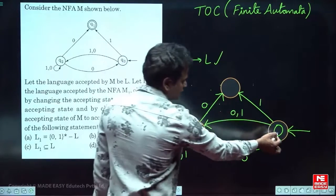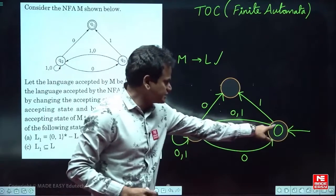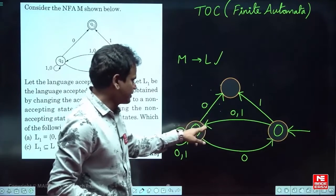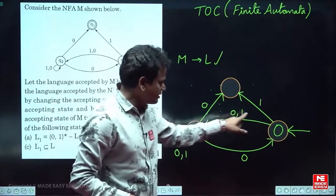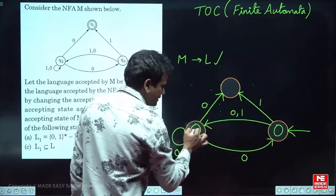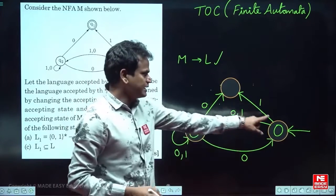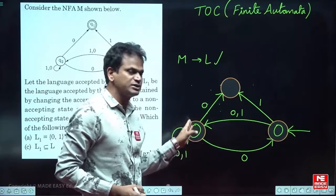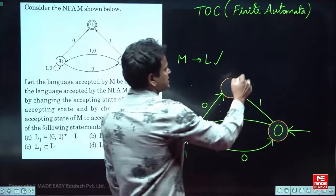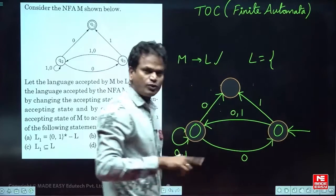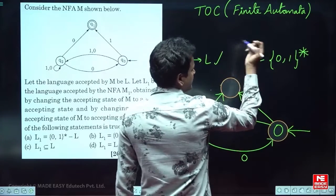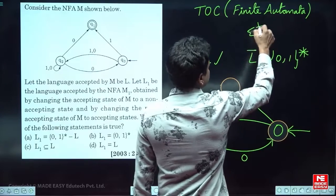Will this new machine M1 accept epsilon? Yes, because the initial state is now final, so it accepts epsilon. Will it accept only 0s? Yes. And for any combination of 0s and 1s, the machine can stop at a final state. So it accepts all strings of 0s and 1s — the language is {0,1}*, the Kleene star.